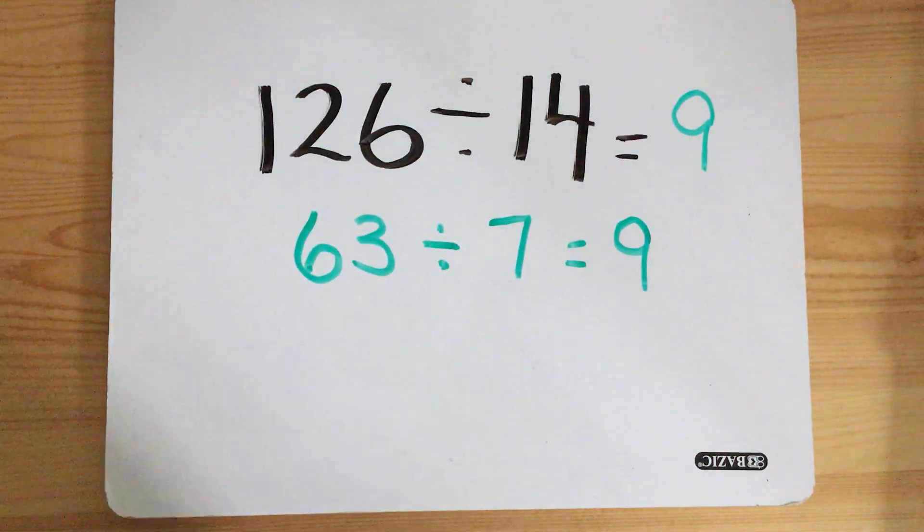It's that easy. If both the numbers are even, you halve them, then you will get your quotient.